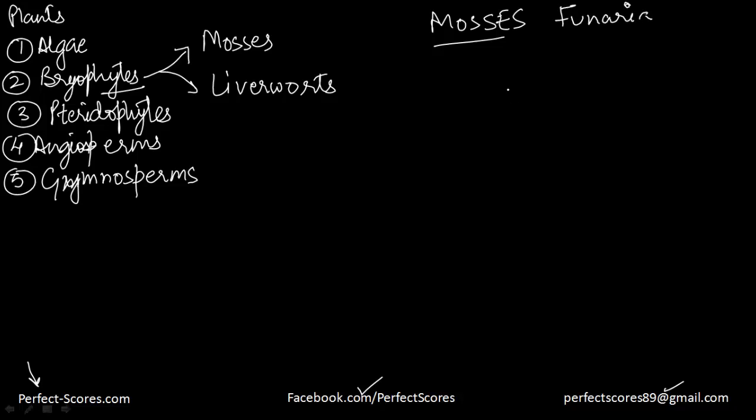The structure of Funaria is that the topmost portion looks like this. This area is called the sporophyte. In this you have two basic components: this thing you can see is called a capsule and the stalk-like thing you can see is called the seta.